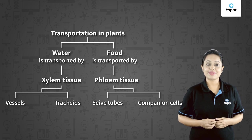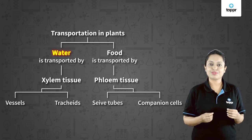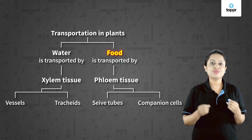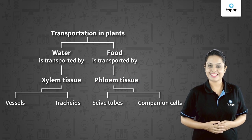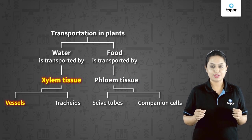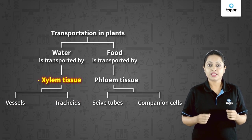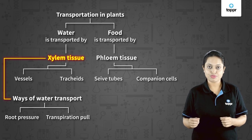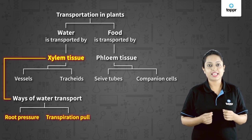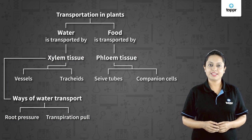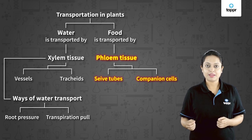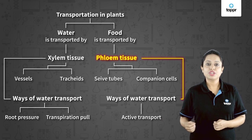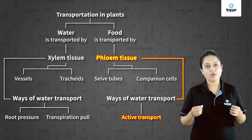In this lesson we have seen that water is transported throughout the plant body by xylem tissue, and food is transported throughout the plant body by phloem tissue. To summarize: xylem tissue has two types of cells — vessels and tracheids — and transports water from roots to leaves by root pressure or transpiration pull. Phloem tissue has two types of cells — sieve tubes and companion cells — and uses energy to translocate food throughout the plant body.